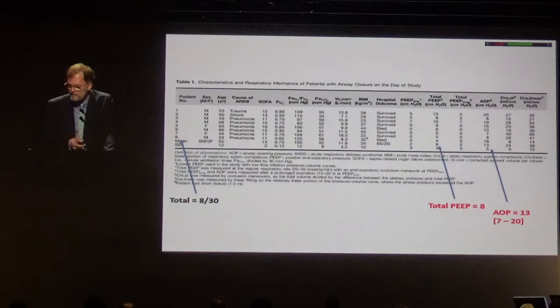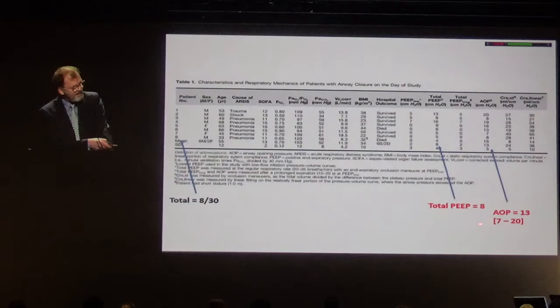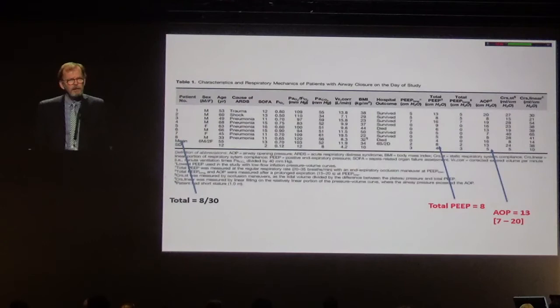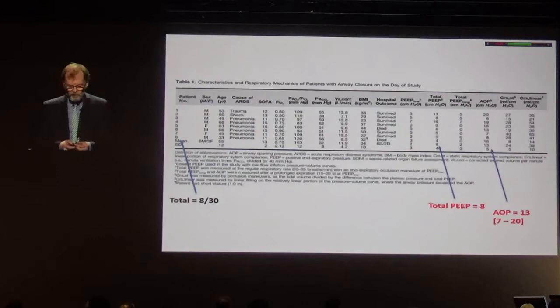Just to show the values: the total PEEP of these patients was eight, but the airway opening pressure ranged from seven to 20. We looked only at what is above five centimeters of water, and you see it can be at pressures up to 20. If you don't do this PV curve, this is almost impossible to detect on classical airway pressure and flow curves.